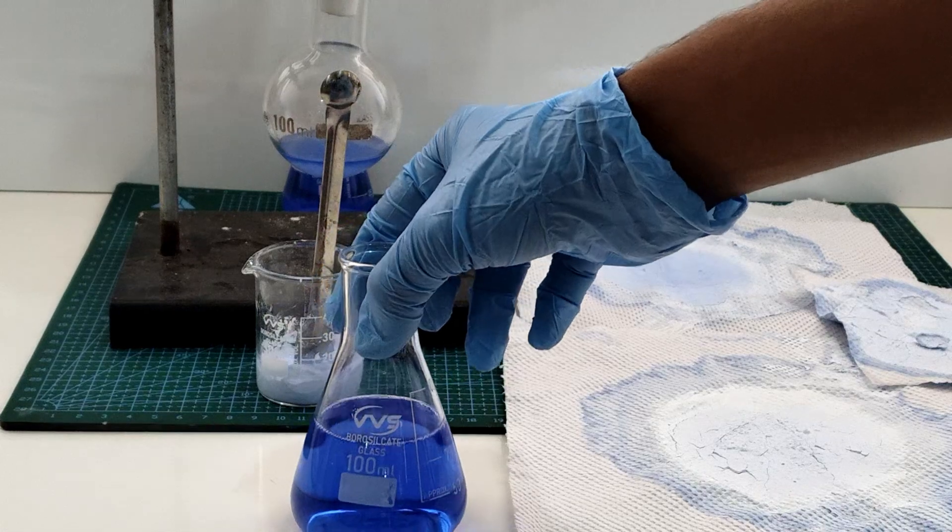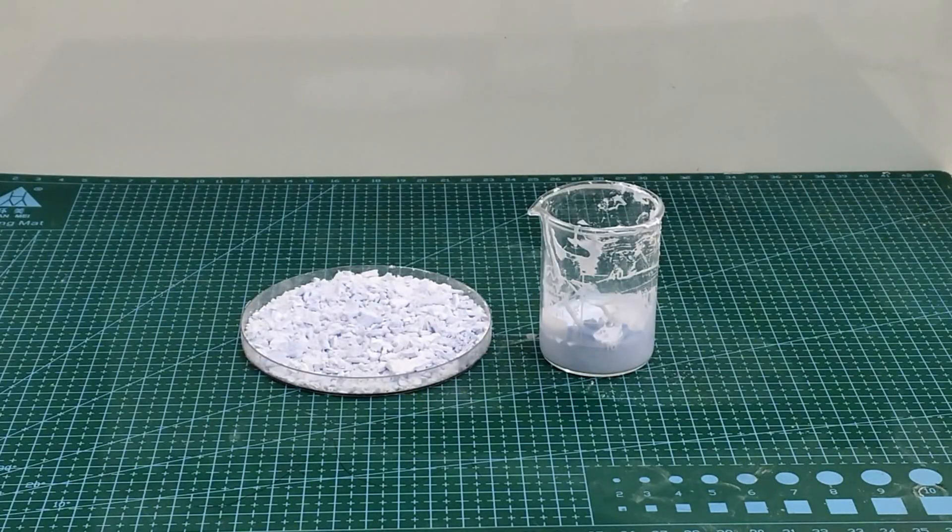This is the filtrate. It contains mostly salt and the dyes from the Harvick, which I will be discarding.